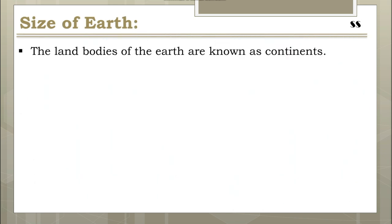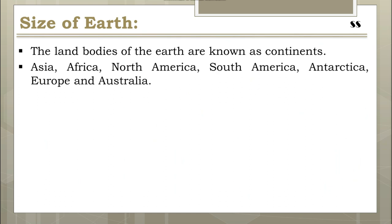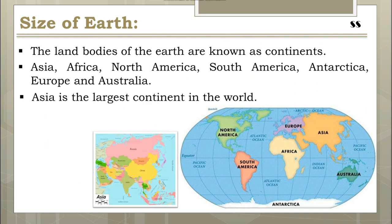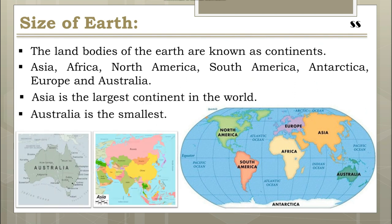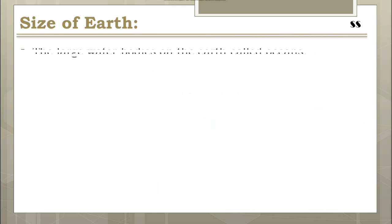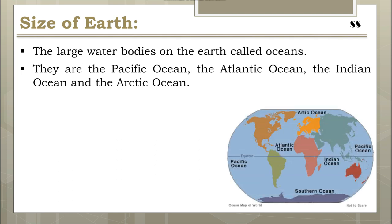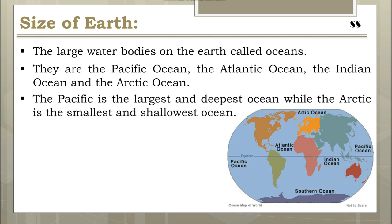The land bodies of the Earth are known as continents. There are seven continents: Asia, Africa, North America, South America, Antarctica, Europe, and Australia. Continents are large-sized land masses. Asia is the largest continent in the world while Australia is the smallest. The large water bodies on the Earth are called oceans. There are four major oceans: the Pacific Ocean, Atlantic Ocean, Indian Ocean, and the Arctic Ocean. The Pacific Ocean is the largest and deepest ocean, while the Arctic Ocean is the smallest and shallowest.